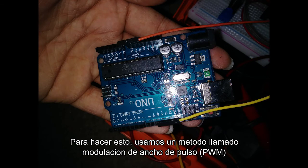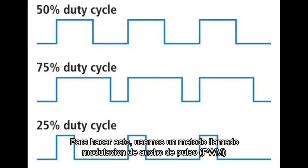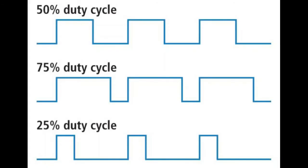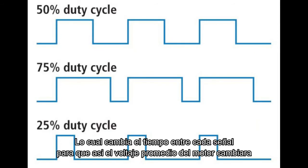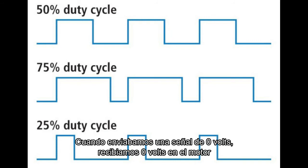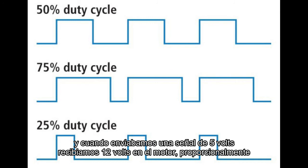And of course, we use the motor controller to control the voltage the motor receives in order to adjust its speed. To do this, we use a method called Pulse Width Modulation with a 5V signal. We change the amount of time between each signal so that the average voltage of the motor will change. When we sent a 0V signal, we got 0V to the motor, and when we sent a 5V signal, we got 12V to the motor.